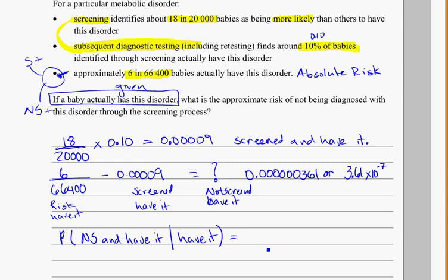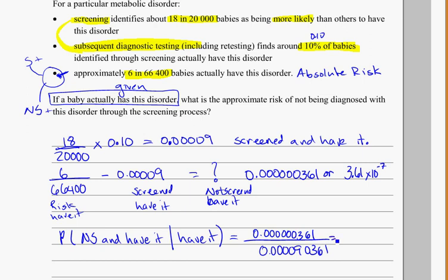The probability that they have it was 6 divided by 66,400, which equals 0.000090361. For conditional probability, out of the group that has it, we ask: what's the probability that they were not screened and do have it? That's the 0.0000361 we figured out. When we put this into our calculator, we get 0.004. So that's the probability, given that they actually have the disorder, that they will not be screened.